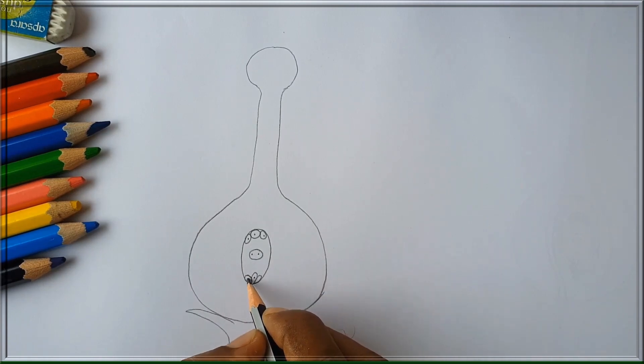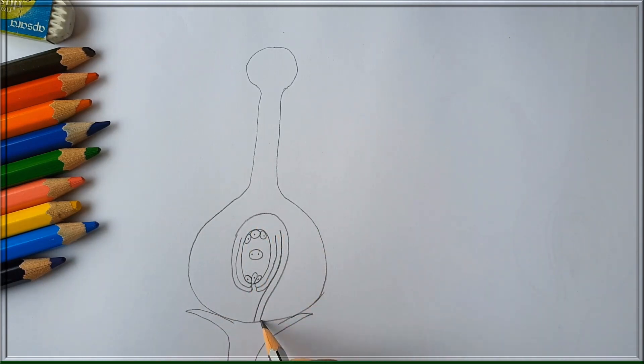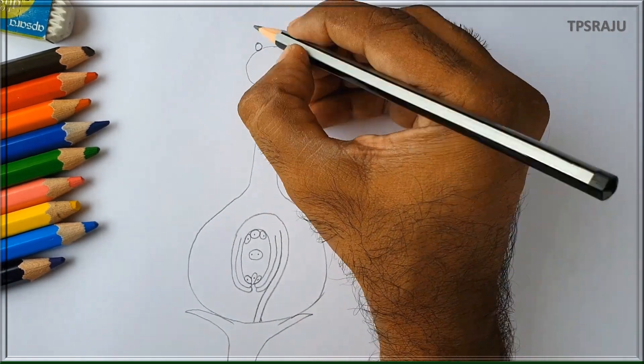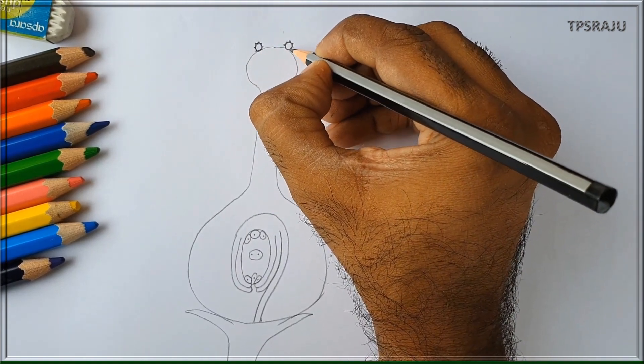Now we are drawing the ovule present in the ovary. This is ovule. These are pollen grains which reach up to the surface of the stigma due to pollination.